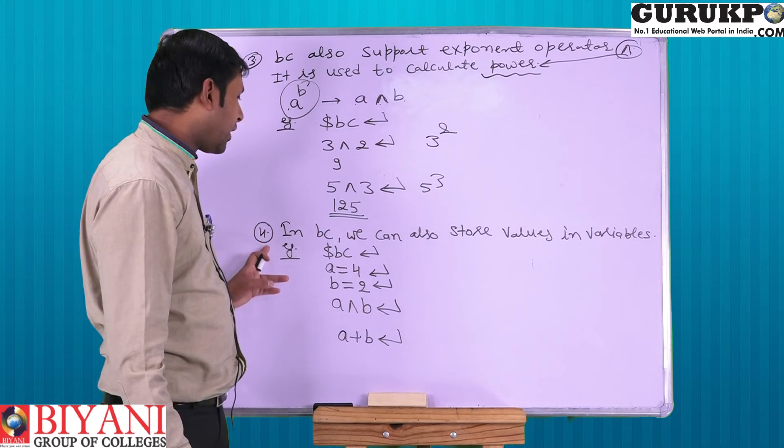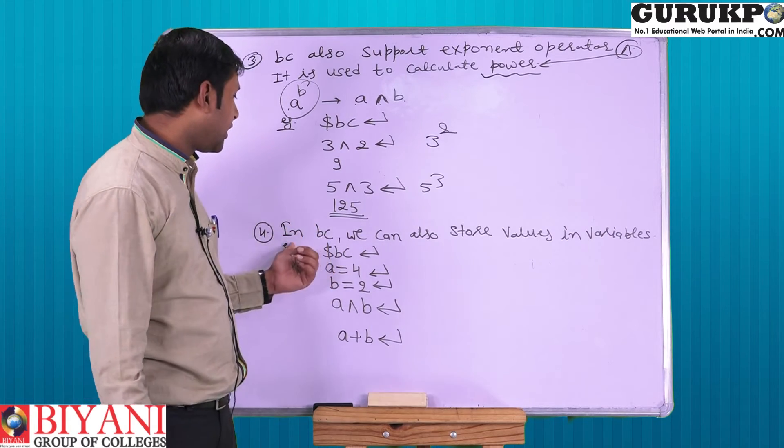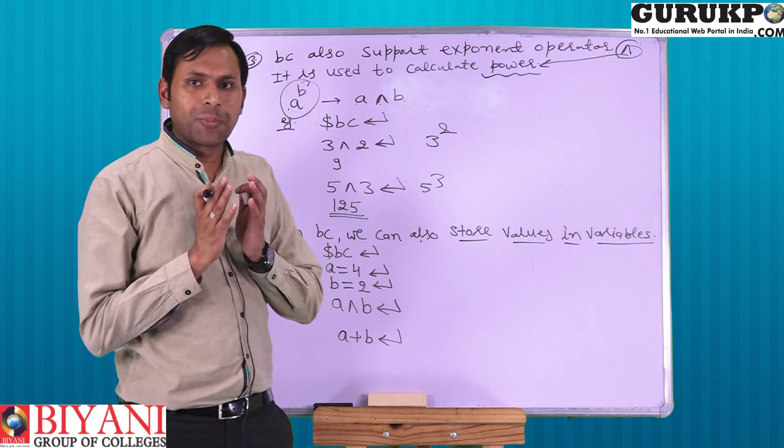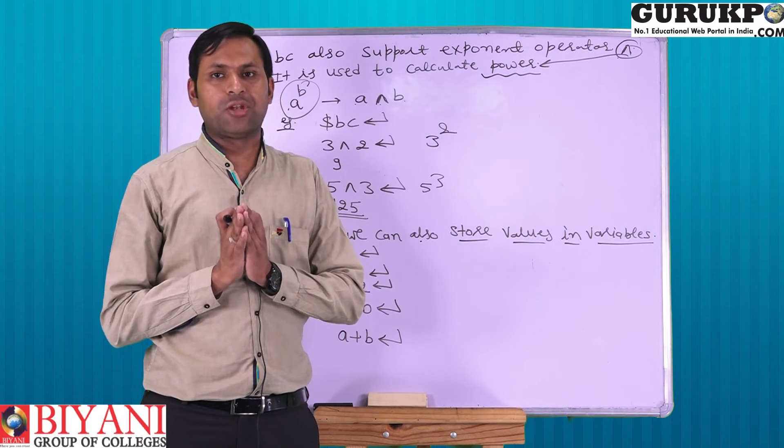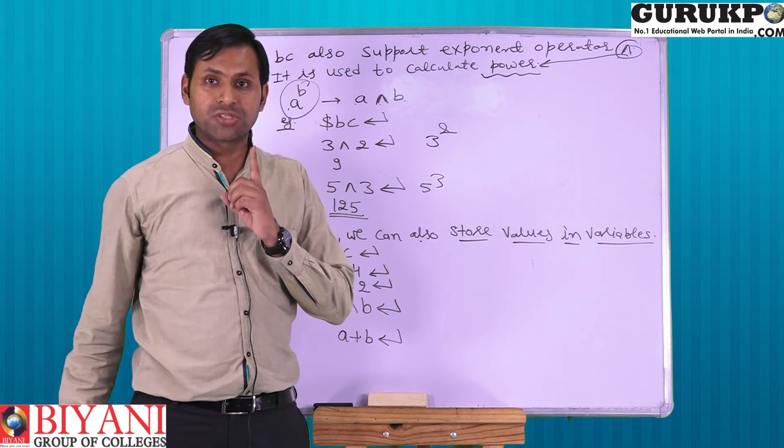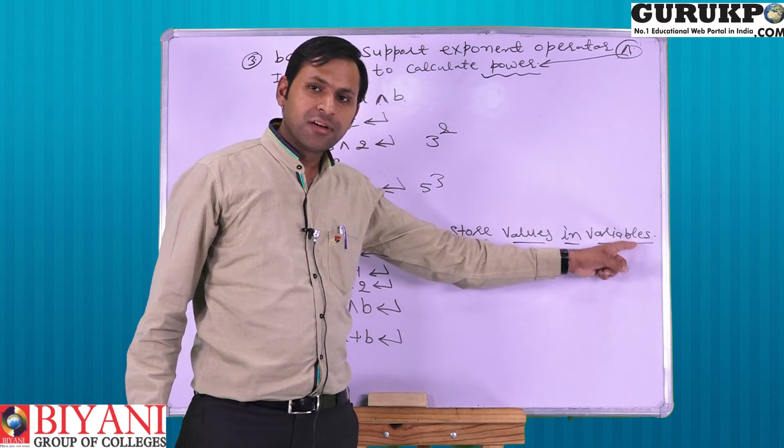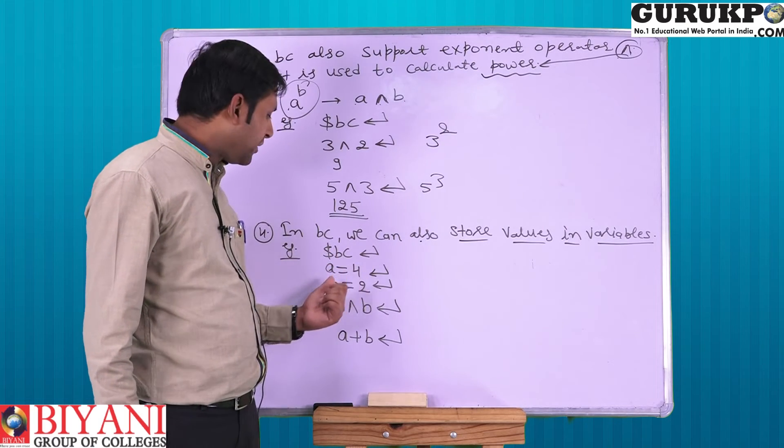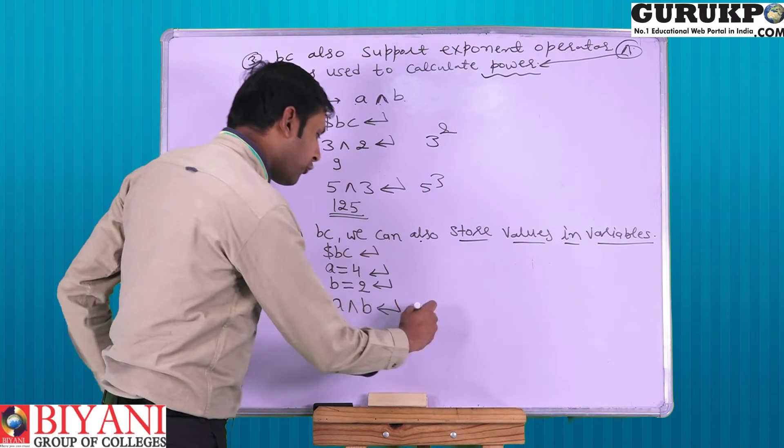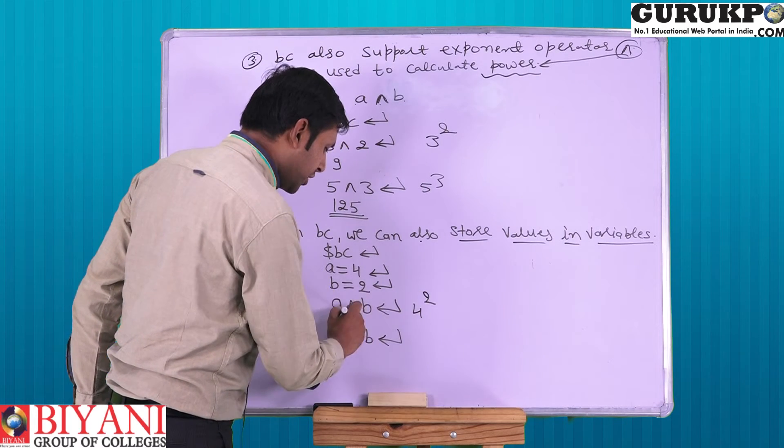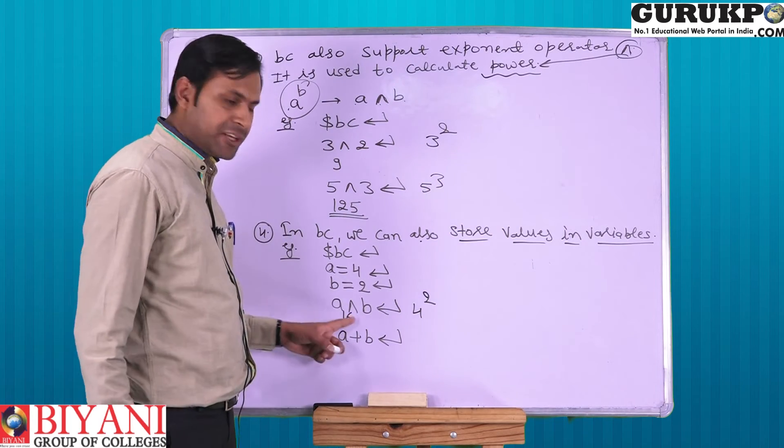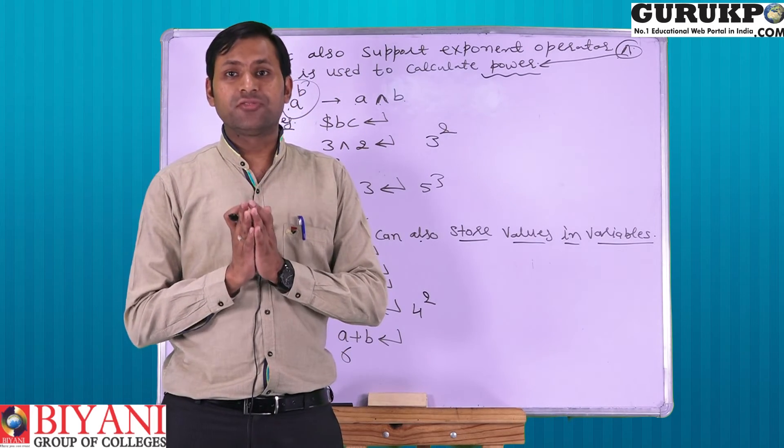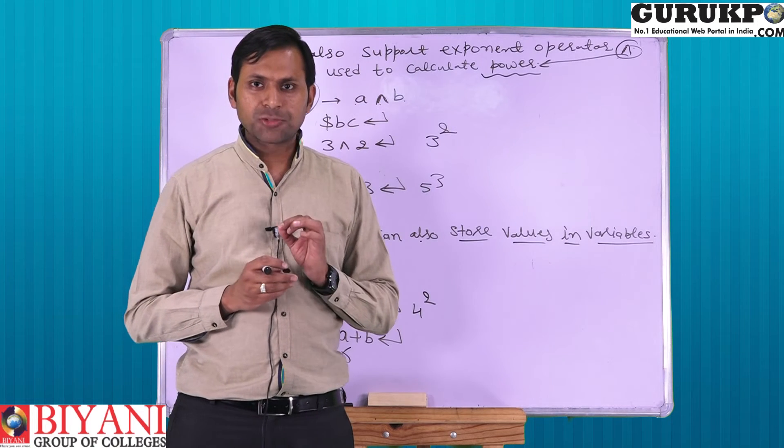Number 4 task which we can do in BC command is that we can also store values in variables. In normal calculator we cannot store values in variables, but by using BC we can also store values in variables. Like a is equal to 4, b is equal to 2. a raised to power b means 4 square, 4 square is 16. a plus b, 4 plus 2, 6. So we can store values in variables also. Getting this point?